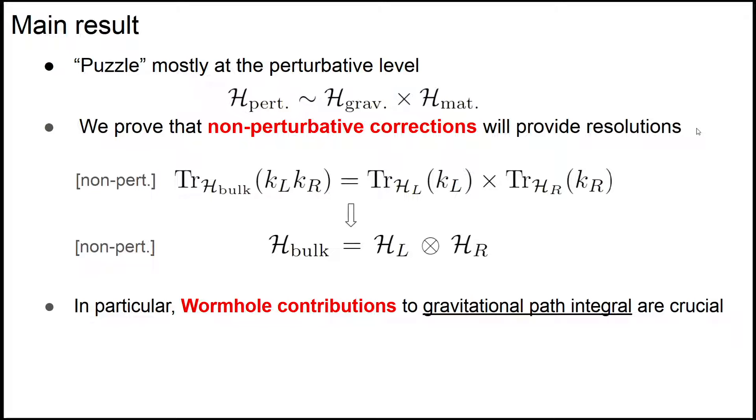This indicates the existence of a factorized basis, meaning the bulk Hilbert space is indeed factorizable. This is in contrast with the perturbative Hilbert space, which is not factorizable. We'll show that wormhole corrections to the gravitational path integral are crucially important for factorization.